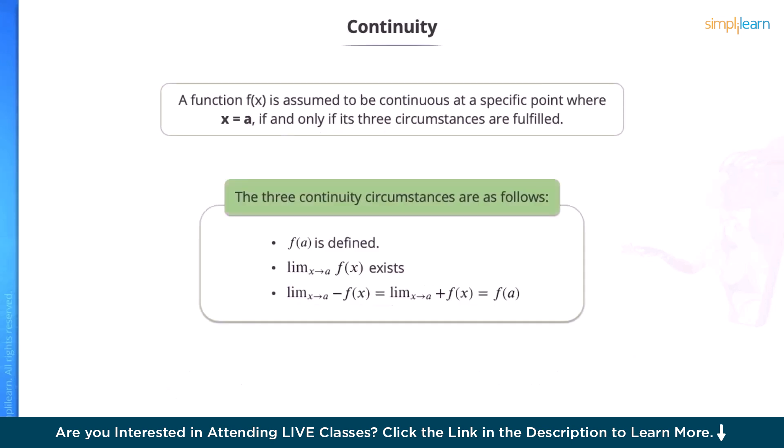Continuity: A function is continuous when there are no gaps or breaks in the graph. However, in calculus, we need to be a bit more specific in our definition of continuity. A function is said to be continuous at x = a if and only if three of these conditions are met. First, the function is defined at x = a, that is f(a) equals a real number. The limit of a function as x approaches a exists. And the limit of the function as x approaches a equals the function value at x = a.